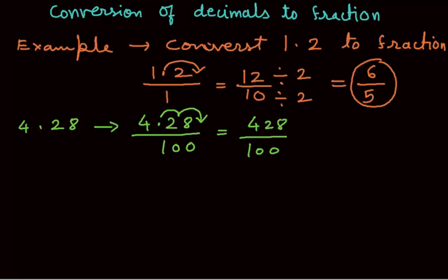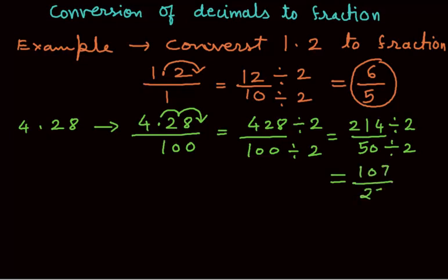Now we will convert this fraction to the lowest form. I am dividing both numbers by 2, so it will be 214 over 50. Again dividing both numbers by 2, the fraction will be 107 over 25. So 107 over 25 is the conversion of decimal 4.28.